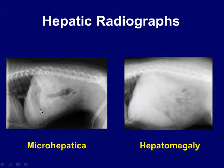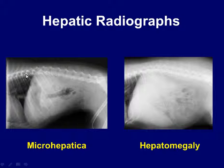We can see the gastric shadow here — we have air in the stomach. We have the edge of the diaphragm here, and we can imagine that the stomach is pushed forward. If you draw a line from the vertebra down, you can see that this line would be pushed forward.